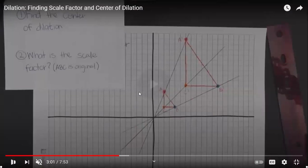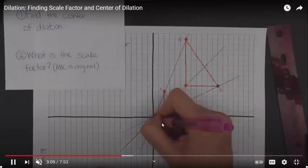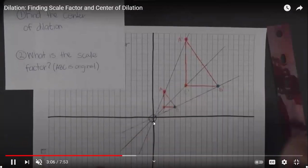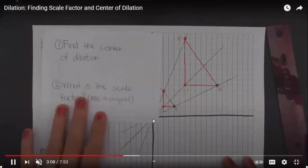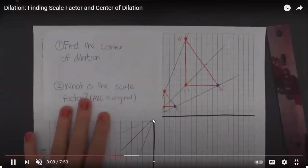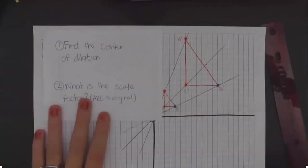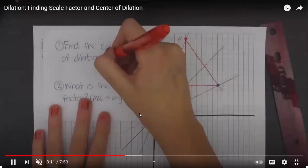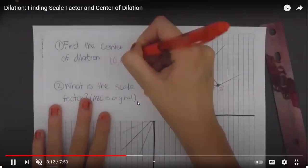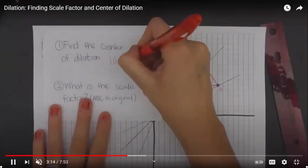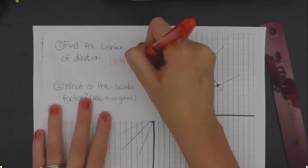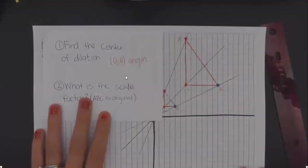We will note that all three lines intersect at the origin point. So the center of dilation for this question will be (0, 0). We dilated the figure around the origin point.